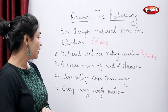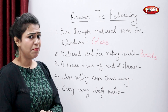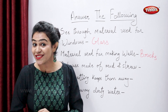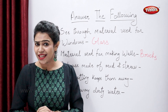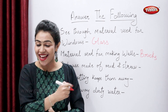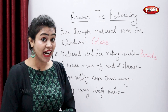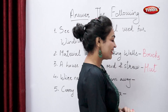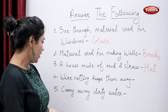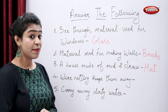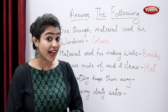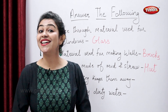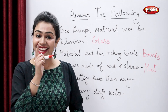Now tell me, a house made of mud and straw. And why does a netting keep them away? What is the correct answer? It keeps away the insects. Correct.